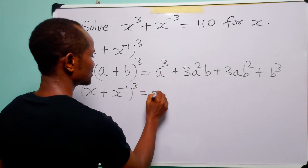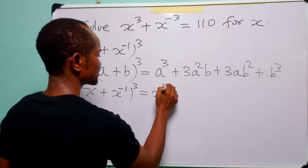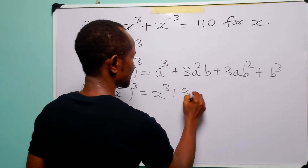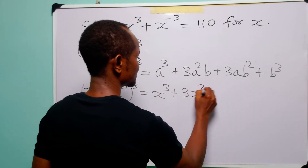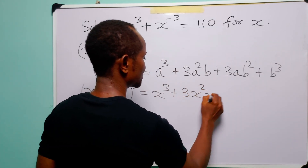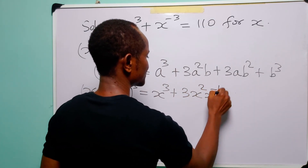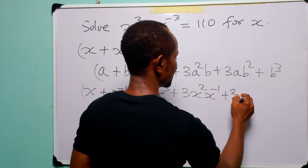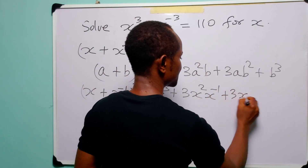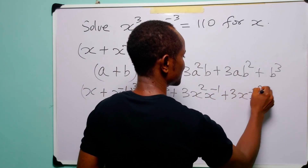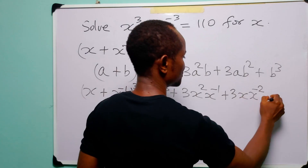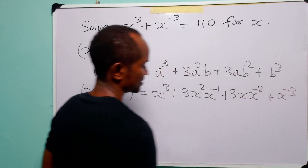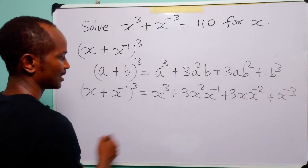(x + x⁻¹)³ is equal to x³ plus 3 times x² multiplied by x⁻¹, plus 3 times x multiplied by x⁻², plus x⁻³.